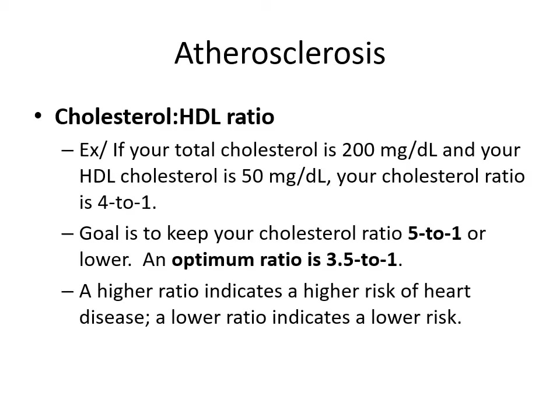We're now more focused on our cholesterol to HDL ratio. If your total cholesterol is 200 and your HDL is 50, your ratio is 4 to 1. The goal is to keep the cholesterol ratio at 5 to 1 or lower, with an optimal ratio of 3.5 to 1. A higher ratio indicates higher risk of heart disease; a lower ratio indicates lower risk.